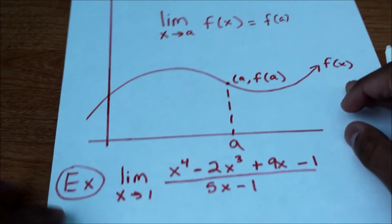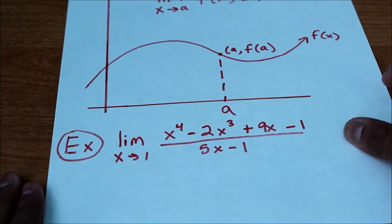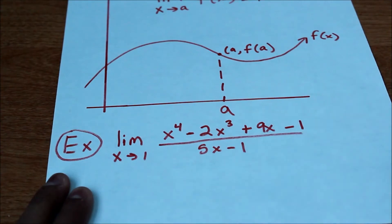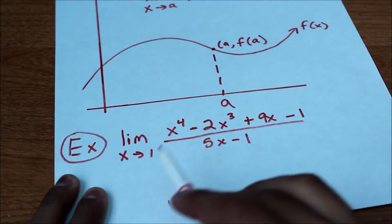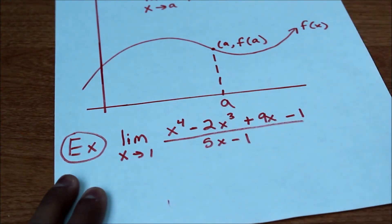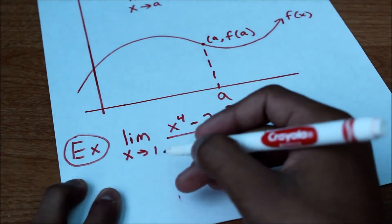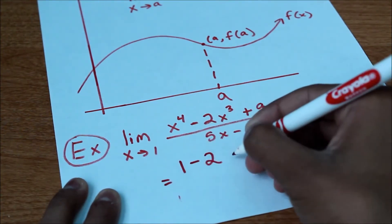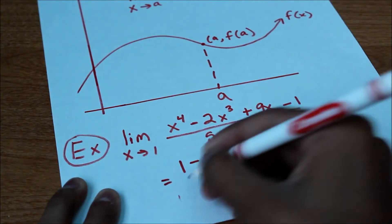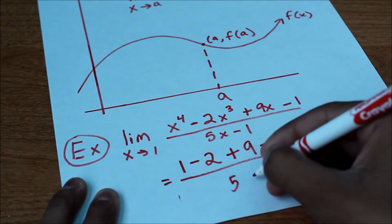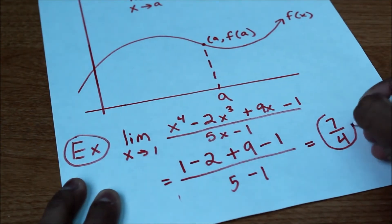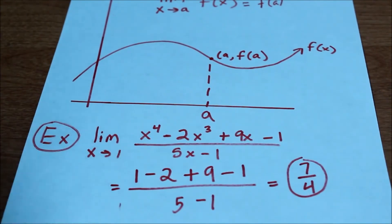Let's take a look at an example. We want to find the limit as x approaches 1 of (x⁴ minus 2x³ plus 9x minus 1) all over (5x minus 1). This is simple — we can notice that if we plug in 1 into each term, we'll get a defined value. Therefore f of 1 exists and the function is continuous. Plugging in 1 gives us (1 minus 2 plus 9 minus 1) over (5 minus 1), which equals 7 over 4.